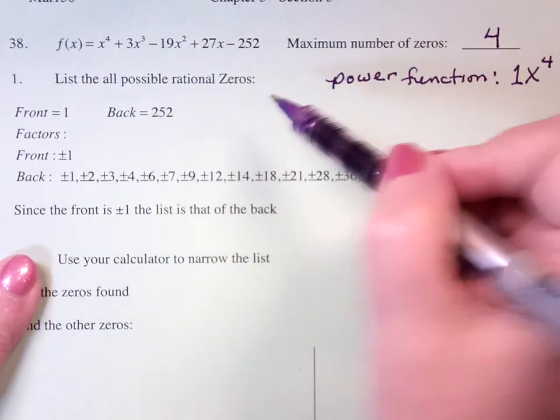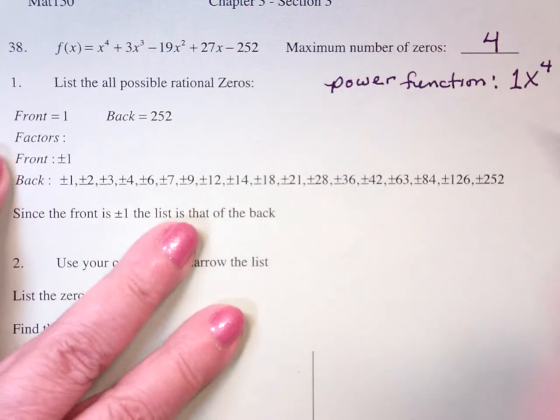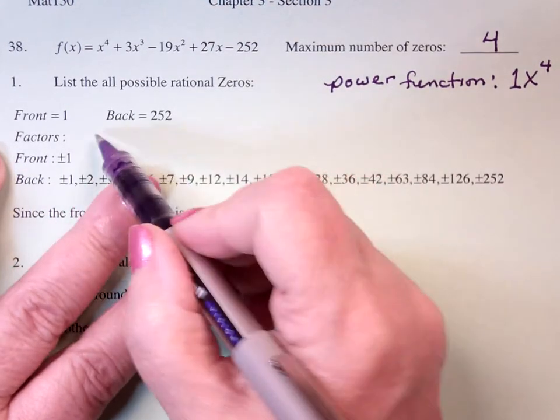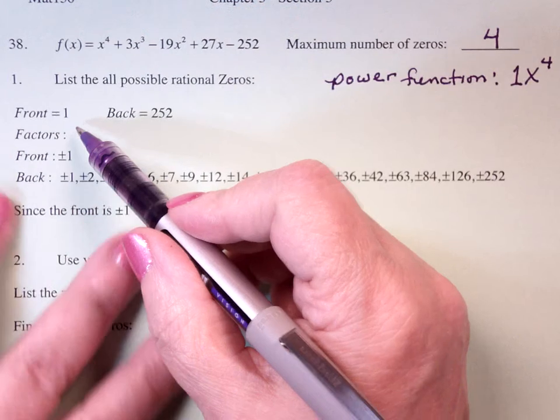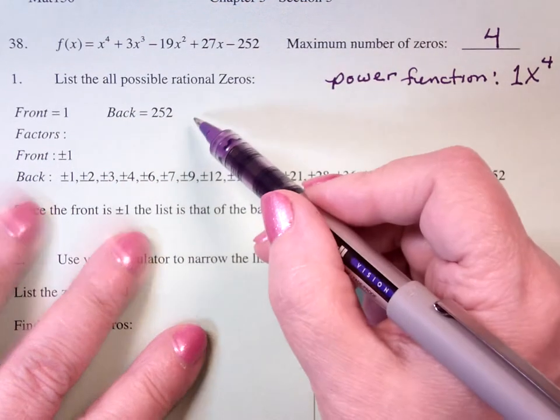Now, list all the possible rational zeros. There are a lot of them, so therefore I listed them for you. The front of the bus is a 1 and the back of the bus is a 252.